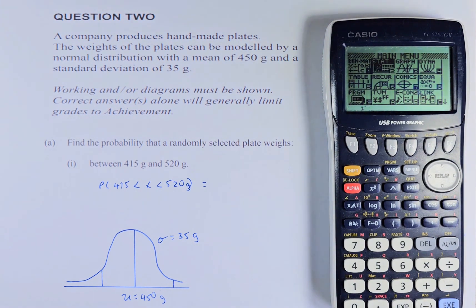A company produced handmade plates. The weight of the plates can be modeled by a normal distribution with a mean of 450 and a standard deviation of 35. So when you do a normal distribution paper question, you always have to draw the graph. So the normal graph looks like this. The mean is 450 and standard deviation is 35 grams.